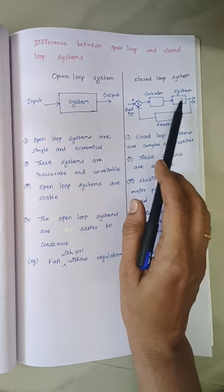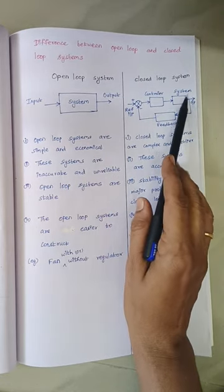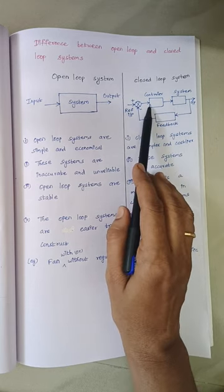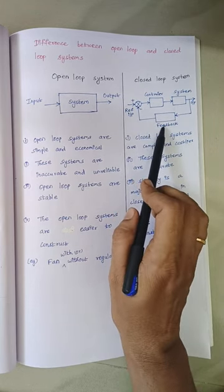Whereas in a closed loop system, we have the same system but with a controller and a feedback.